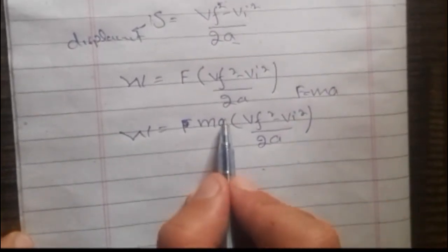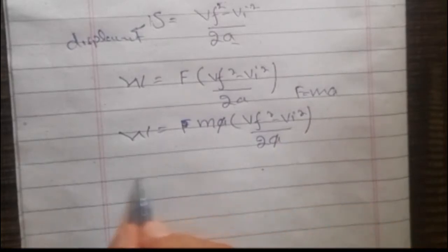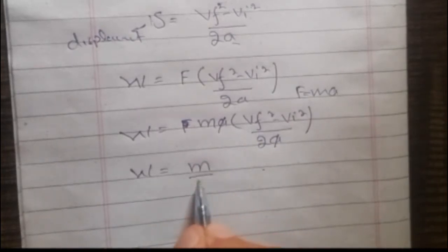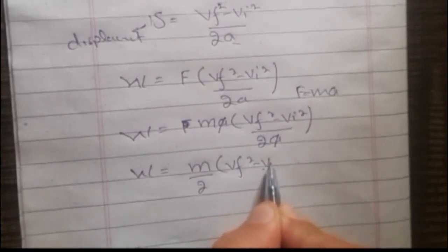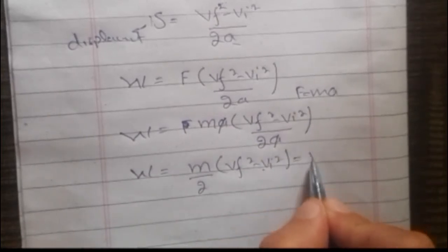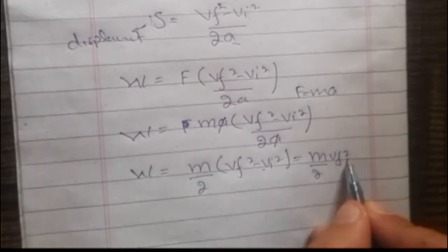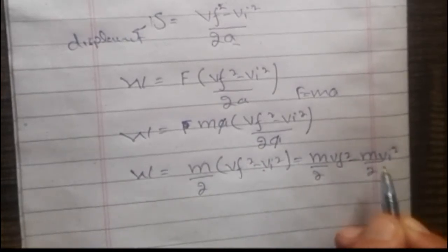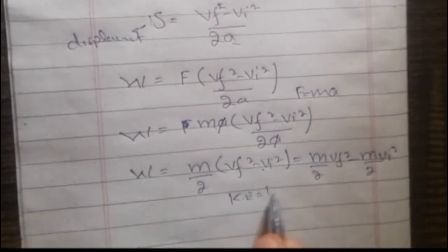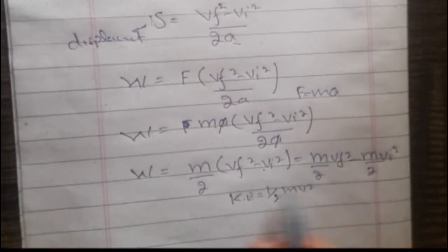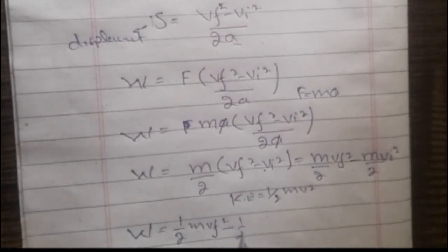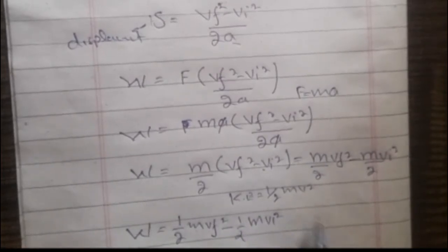Now this 'a' cancels out with the other 'a', and W becomes equal to (m/2) × (vf² - vi²), which equals mvf²/2 - mvi²/2. Since kinetic energy is equal to ½mv², we can write this as W = ½mvf² - ½mvi².